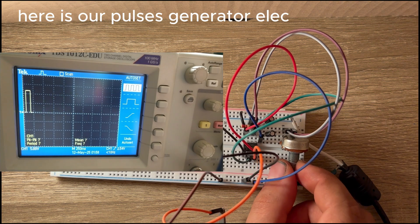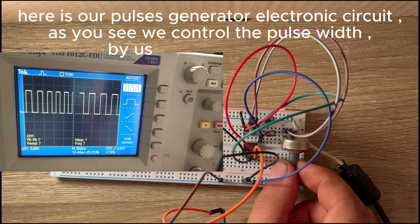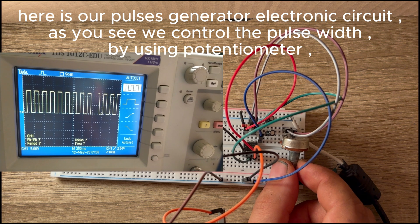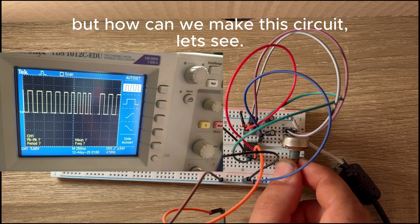Here is our pulse generator electronic circuit. As you see, we control the pulse width by using a potentiometer. But how can we make this circuit? Let's see.